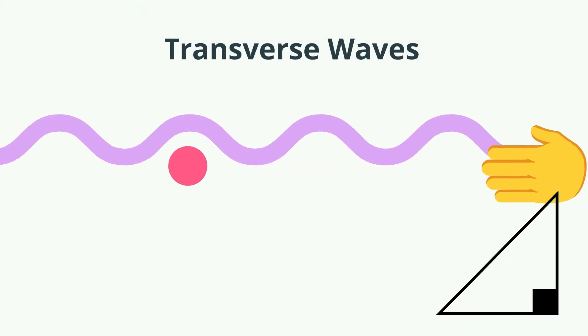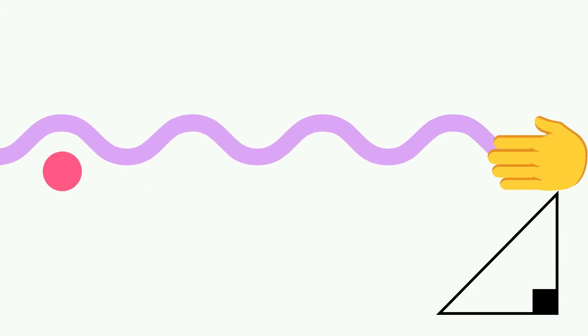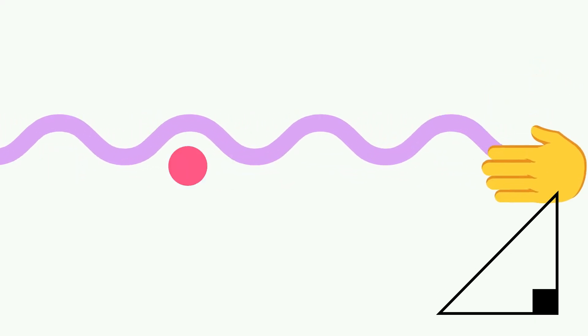Notice as this hand oscillates up and down, the wave moves at a right angle to the oscillations of the hand.